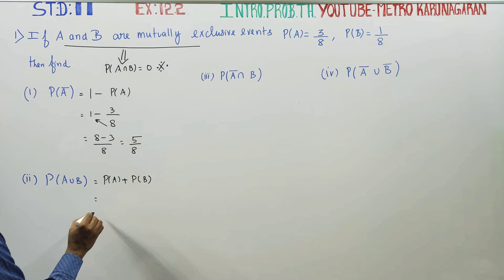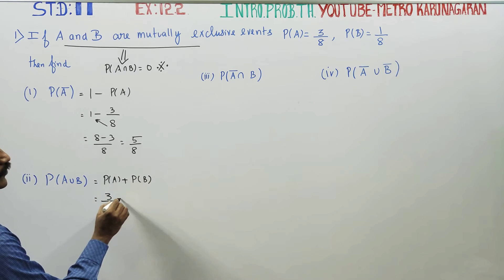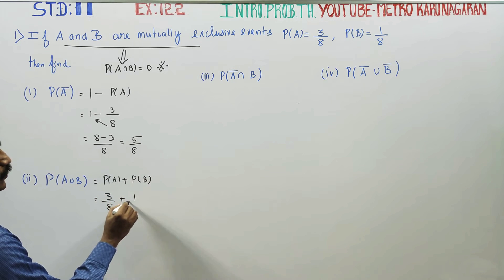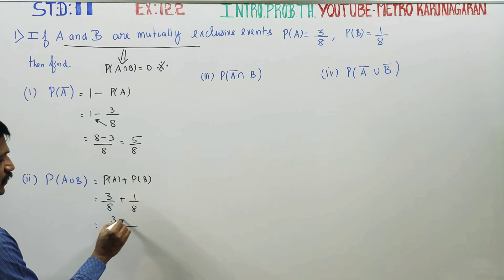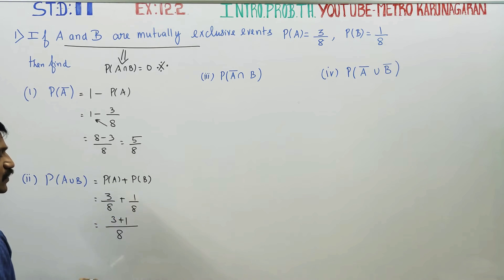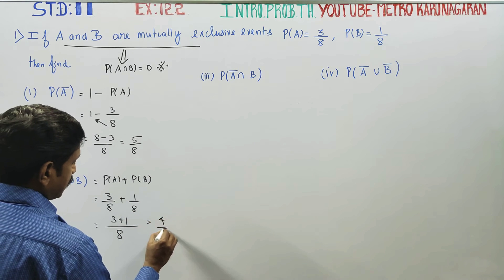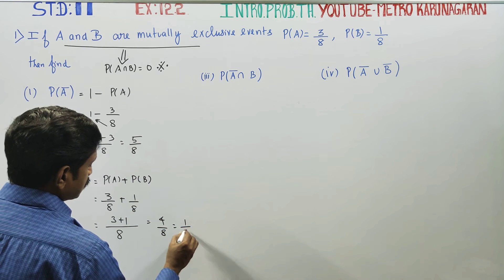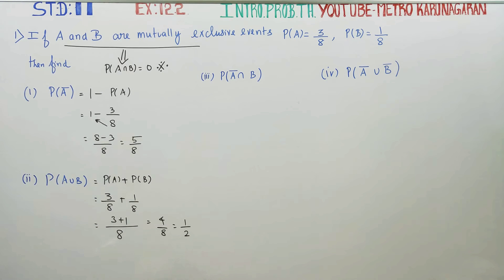Now, probability of A is 3 by 8 and probability of B is 1 by 8. Taking LCM, the answer denominator is 8. So probability of A union B equals probability of A plus probability of B, which gives 3 by 8 plus 1 by 8.